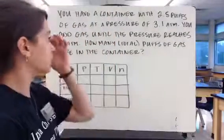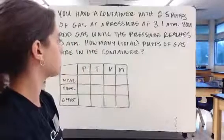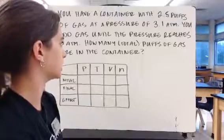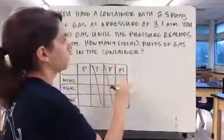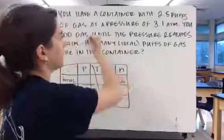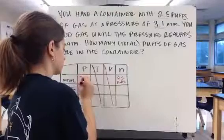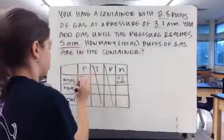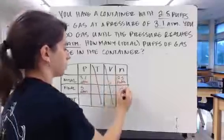Let's look at our second example. You have a container with 2.5 puffs of gas and a pressure of 3.1 atmospheres. You add gas until the pressure reaches 5 atmospheres. How many total puffs of gas are in the container? So we can ignore the temperature and the volume. We start with 2.5 puffs, and it's at 3.1 atmospheres. And you add gas until the pressure reaches 5 atmospheres. So that's our final.